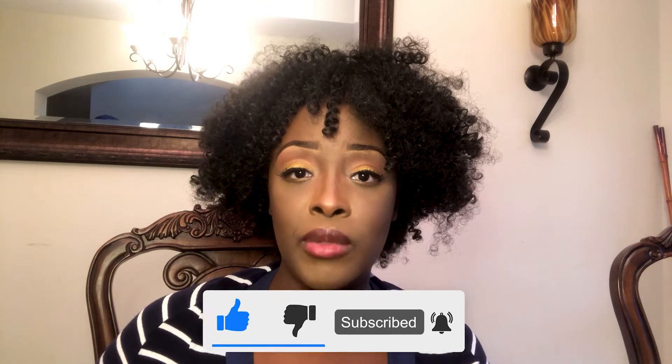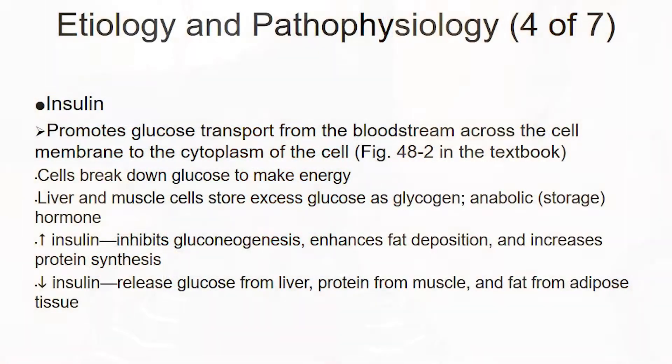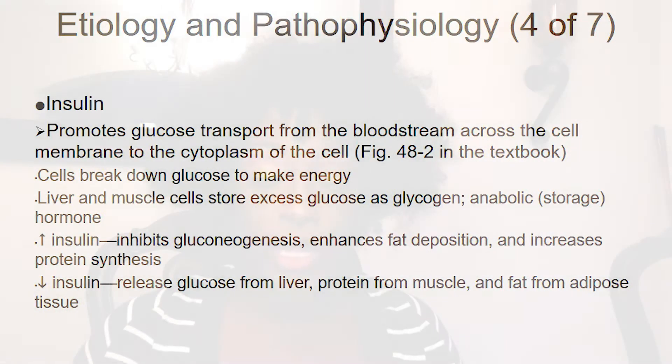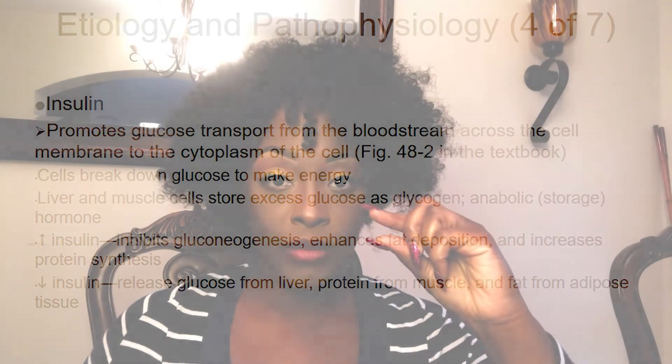Don't forget insulin is secreted from the pancreas — the beta cells of the Islets of Langerhans. The next slide goes over insulin and when it's secreted the most. Insulin is secreted continuously, but in very minute amounts. Whenever you eat a bolus of food, the insulin that's secreted shoots up, because obviously if you're eating, you're going to have higher glucose levels.